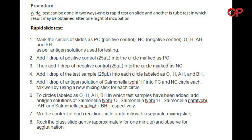Step four: add one drop of the test sample into each circle labeled as O, H, AH, and BH. Step five: add one drop of antigen solution of Salmonella typhi H into PC and NC circle each.